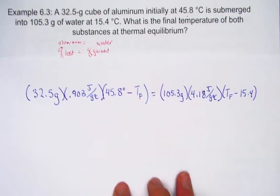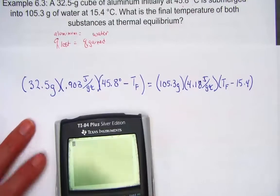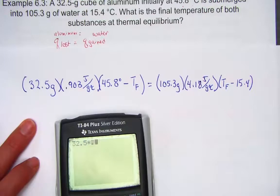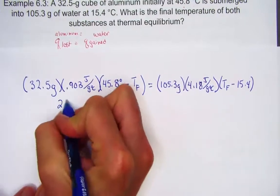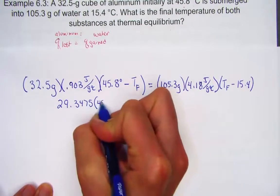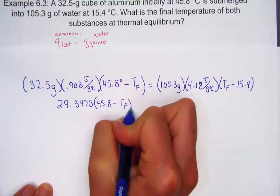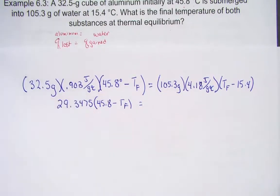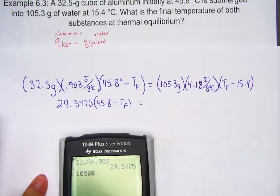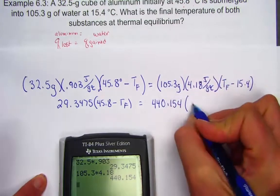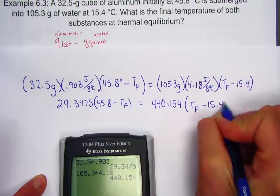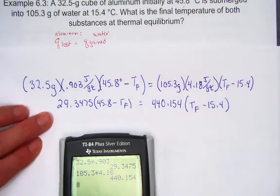Let's begin some algebra to simplify our left side and the right side. 32.5 times 0.903 is 29.3475, and I'll still have the delta T there, so I'll just represent that parenthesis. So all I've done so far is simplified the first two parenthesis. 105.3 times 4.18 is 440.154. And I'll still show the parenthesis, Tf minus 15.4.